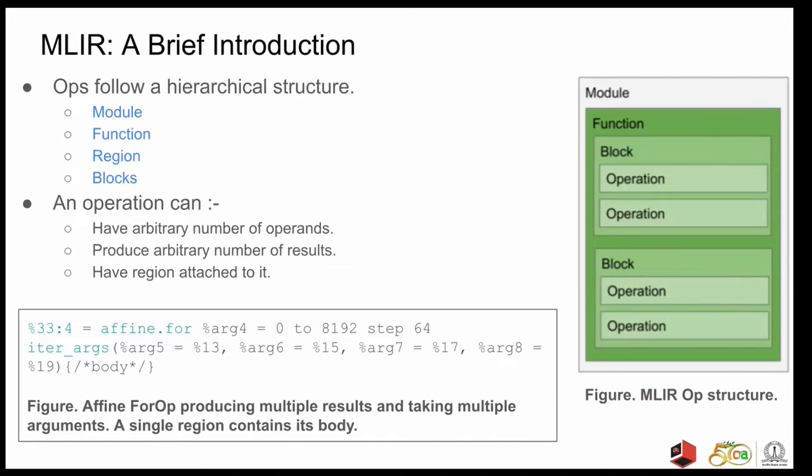The ops in MLIR follow a hierarchical structure, with the highest level op being the module op. A module op may contain many functions, and each function will have a region attached to it that represents its body. A region is again a list of basic blocks. An operation can have arbitrary number of results and operands, and can have a region attached to it. For example, the affine.for operation shown in the figure takes five arguments. One is its loop induction variable, and four other arguments. It produces four results and has a region attached to it, which represents the body of the for loop.